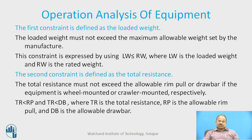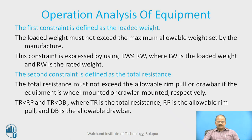The operational analysis of the equipment has two constraints. The first constraint is the loaded weight — the loaded weight must not exceed the maximum allowable weight set by the manufacturer. This constraint is expressed as Lw ≤ Rw, where Lw is the loaded weight and Rw is the rated weight.